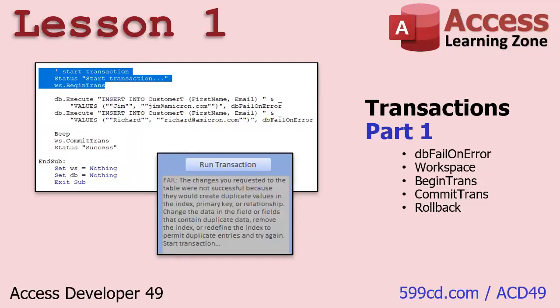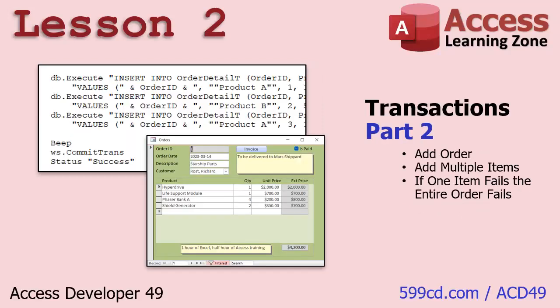In lesson one, we'll keep it simple — we'll do some simple transactions with customer records. I'll teach you how to start the transaction, commit the transaction, and roll it back if you need to. Then in lesson two, we'll do something a little more complicated: we'll add an order with a bunch of detail items and check the inventory level on each of those items as you add it. And if it's too low, cancel the whole order. That's the power of transactions.